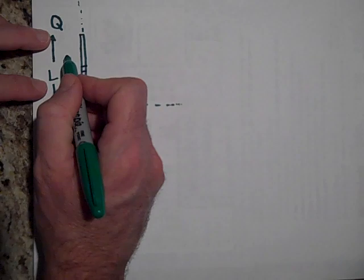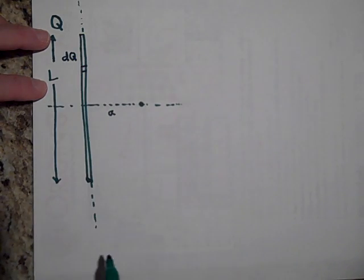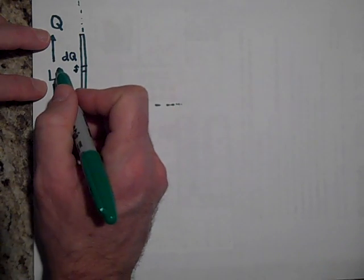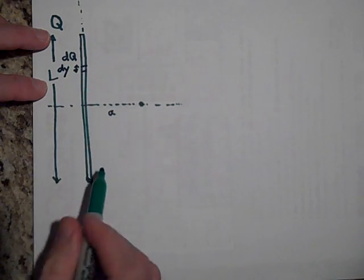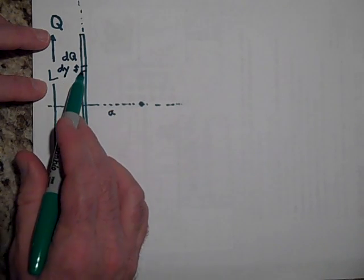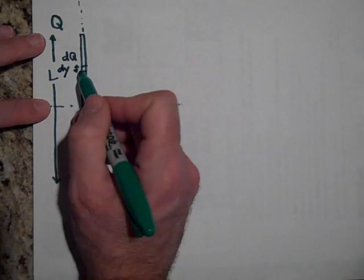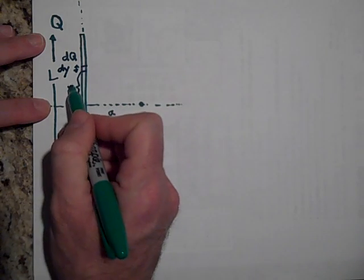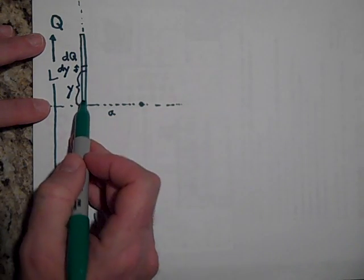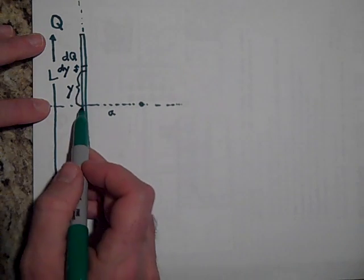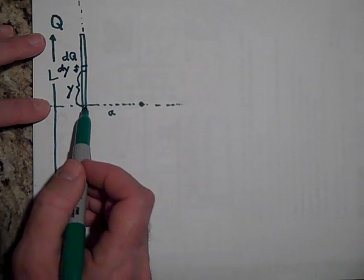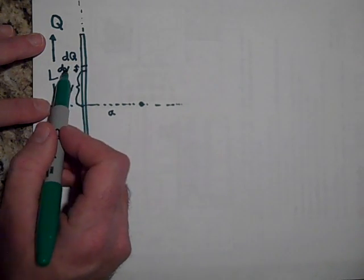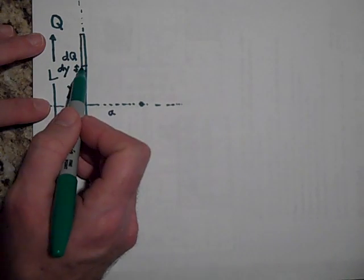We'll draw some generic segment there. That's not Q, the whole thing is Q. That's a very tiny segment we're gonna call DQ. The reason we're gonna call it DQ is because the length of this segment is DY. It's at a height of Y above the X axis. It's got a little charge DQ and a very thin thickness DY. Because of that we can treat it like a point charge.